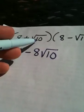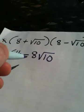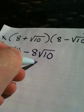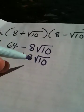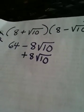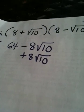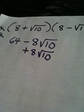Inner: root 10 times 8 is positive 8 root 10. Notice how I wrote those on top of each other because they're like terms, so it's easier to make them cancel later. And the last two together...